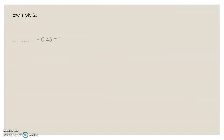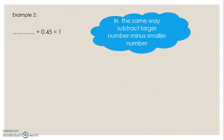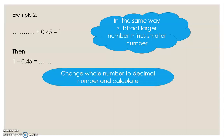Example 2: What number plus 0.45 equals 1? In the same way, subtract larger number minus smaller number: 1 minus 0.45. In order to solve, change the whole number to a decimal number and calculate: 1.00 minus 0.45, decimal points above each other. I borrow and calculate the answer, which is 0.55.